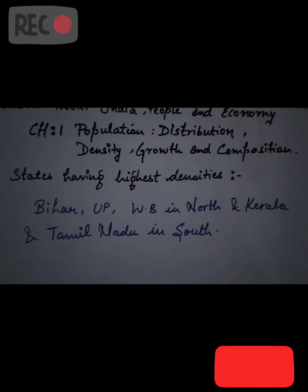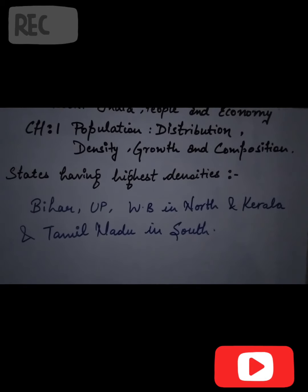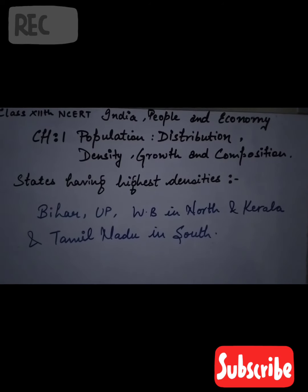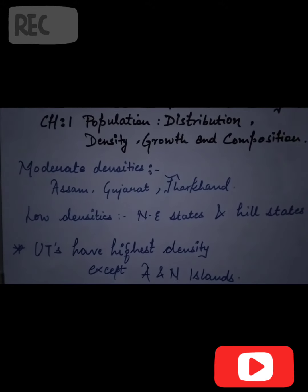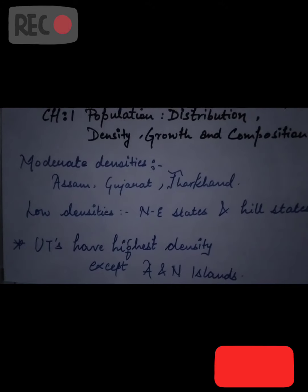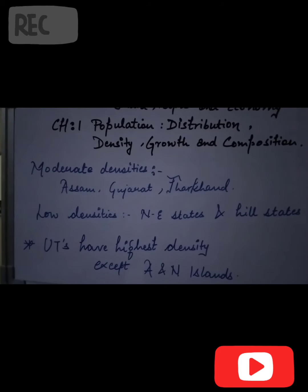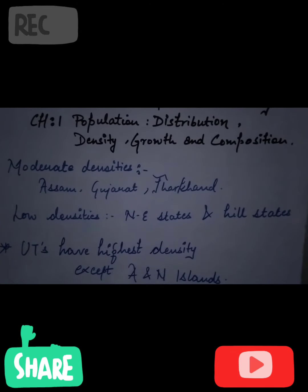States with the highest densities are Bihar, UP, and West Bengal in the north, and Kerala and Tamil Nadu in the south. Areas with moderate densities include Assam, Gujarat, and Jharkhand. Hill states of India have the lowest density. All union territories have the highest density, except Andaman and Nicobar Islands.